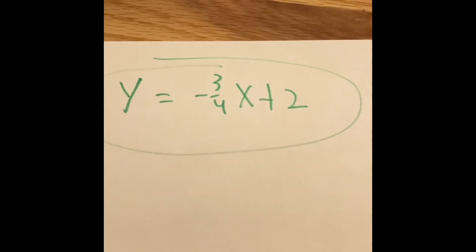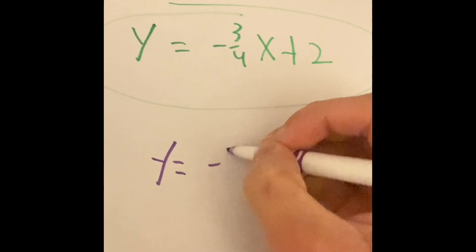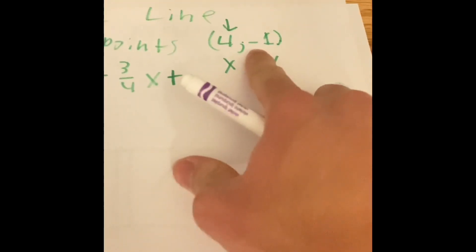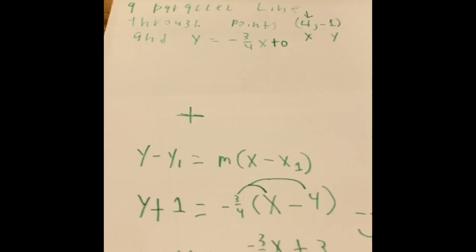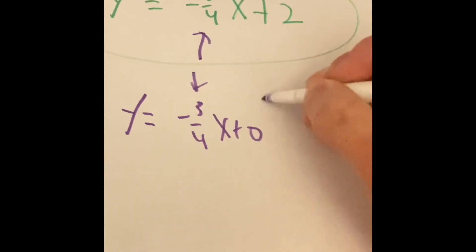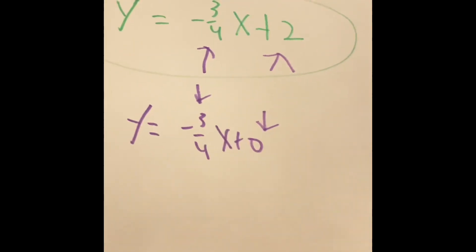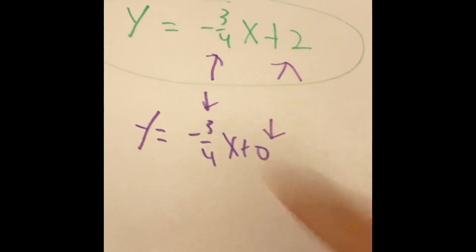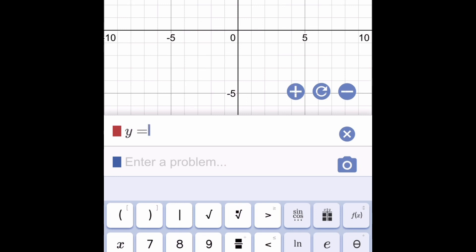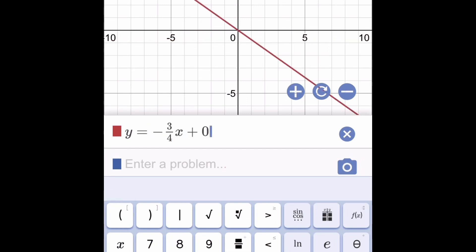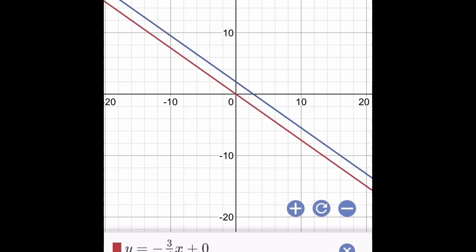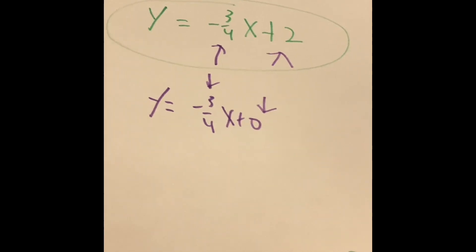Not only is this line parallel to y equals negative 3 over 4 x plus 0, but it also passes through the point (4, -1). Parallel lines have the same slopes but different y-intercepts — they start at different positions but are parallel because they have the same slope. Here's an example of parallel lines on a graph, and here is an example of parallel lines in real life.